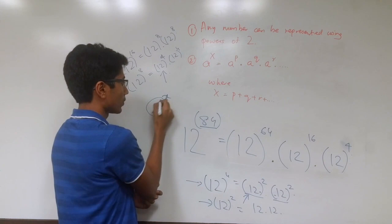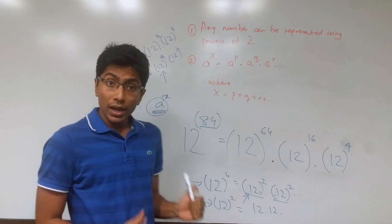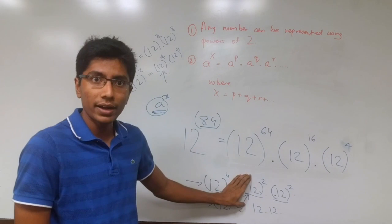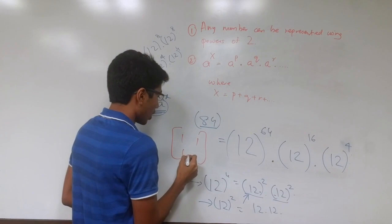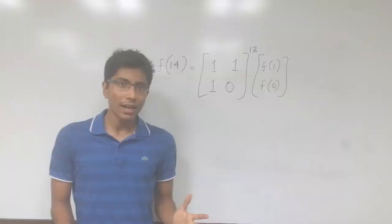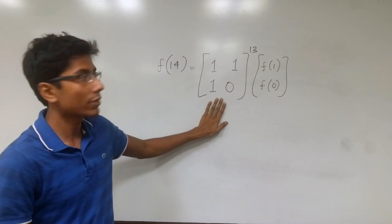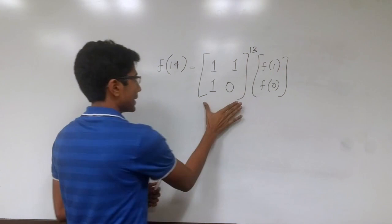For Fibonacci numbers, we are going to do the same thing — the same logic of binary exponentiation, but using matrices. So instead of having a simple number, we are going to have our 2×2 matrix. And this works on matrix exponentiation too, because matrix multiplication is associative. As an example, F(14) equals our matrix [1,1;1,0] raised to power 13, times the two base conditions as a column. We need to keep all the powers of 2 of this matrix stored.